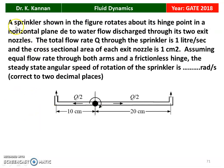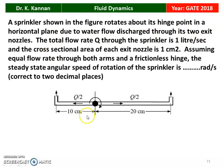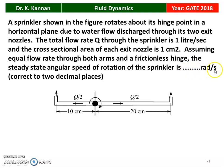Next question from the 2018 question paper. A sprinkler rotates about its hinge point in the horizontal plane due to water flow discharged through its two exit nozzles. The right-side nozzle is 20 cm from the center and the left-side nozzle is 10 cm from the center. The total discharge is 1 liter per second, shared 50% on each side. The cross-sectional area of each exit nozzle is 1 cm². What is the steady-state angular speed of rotation?